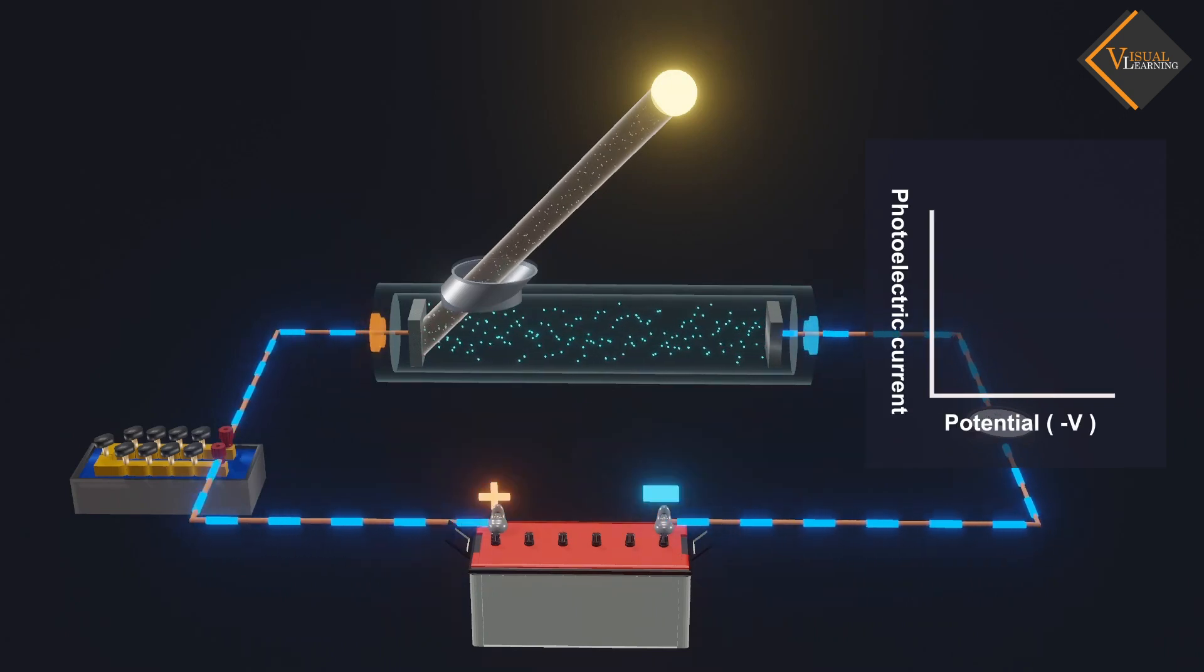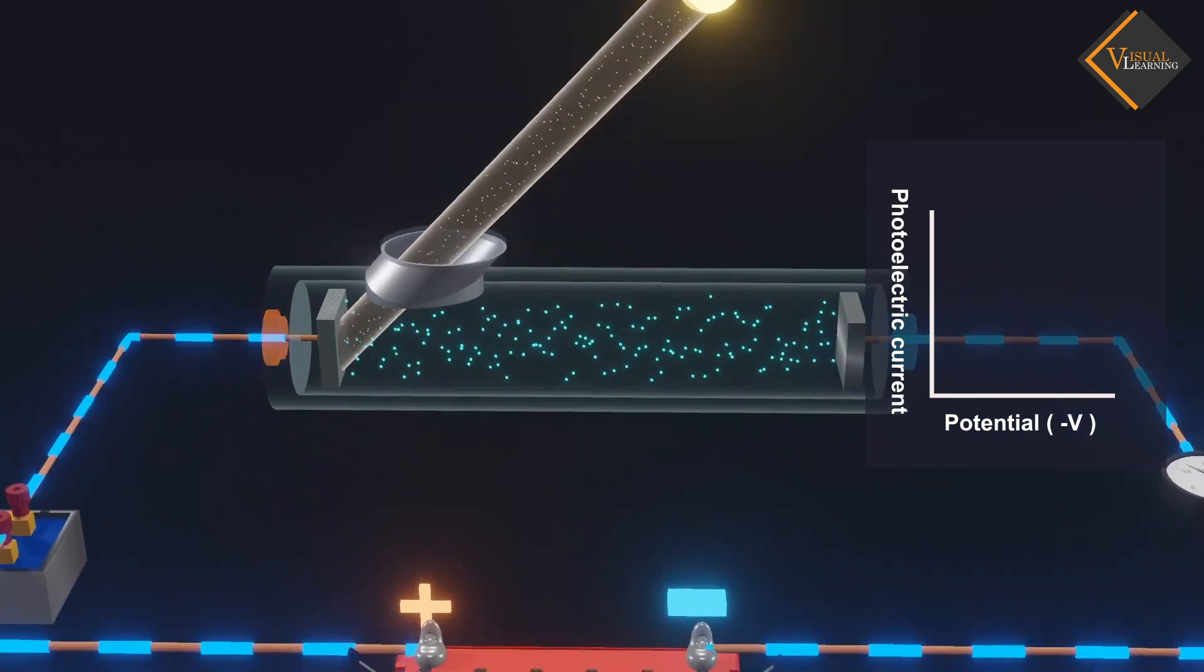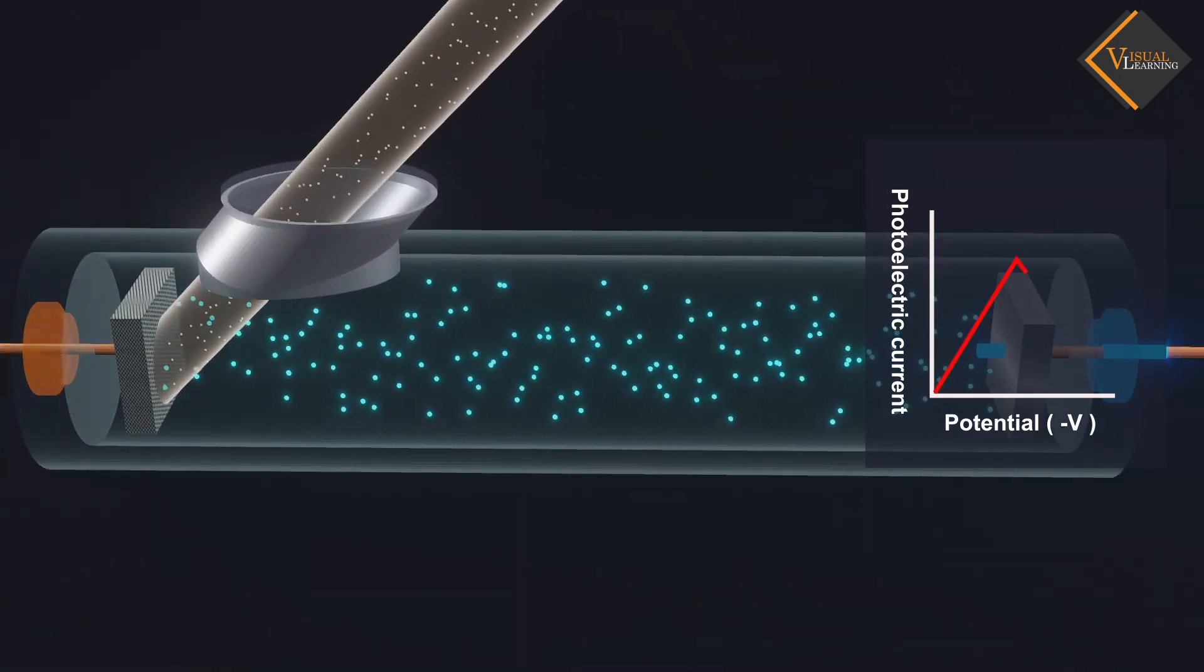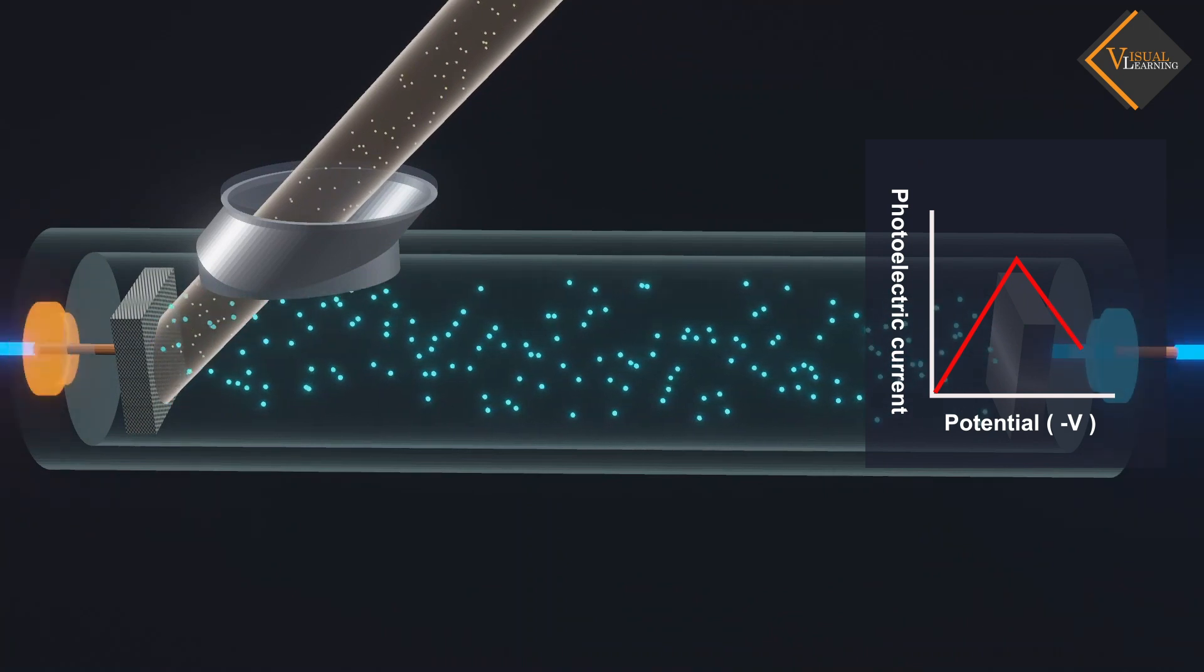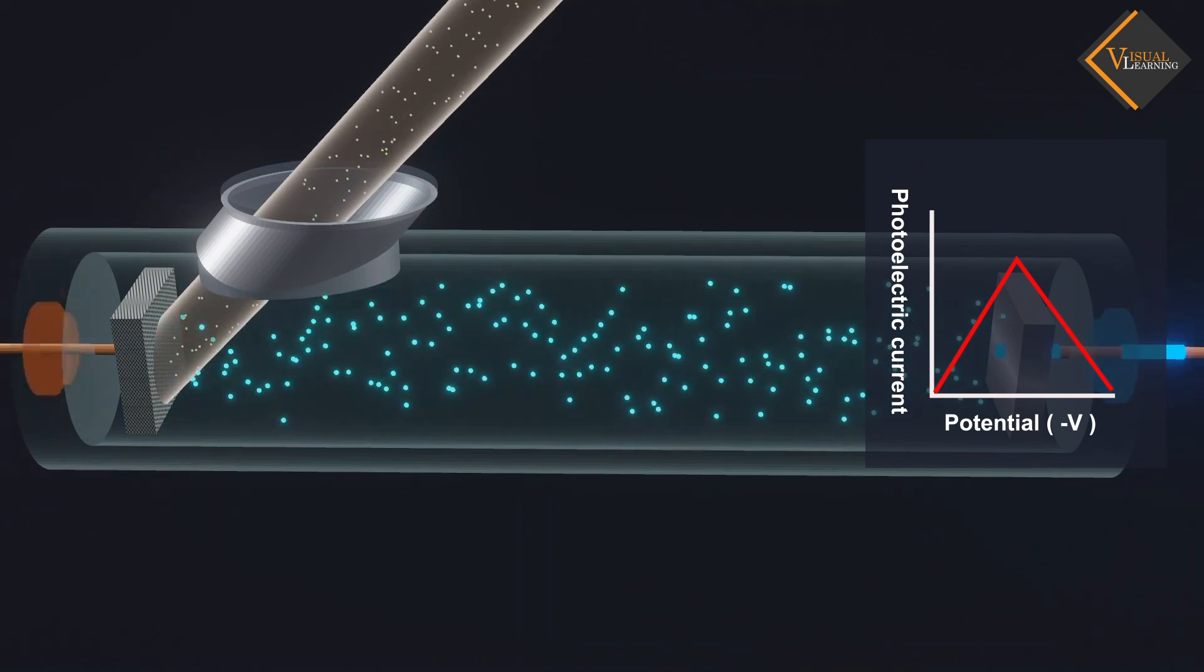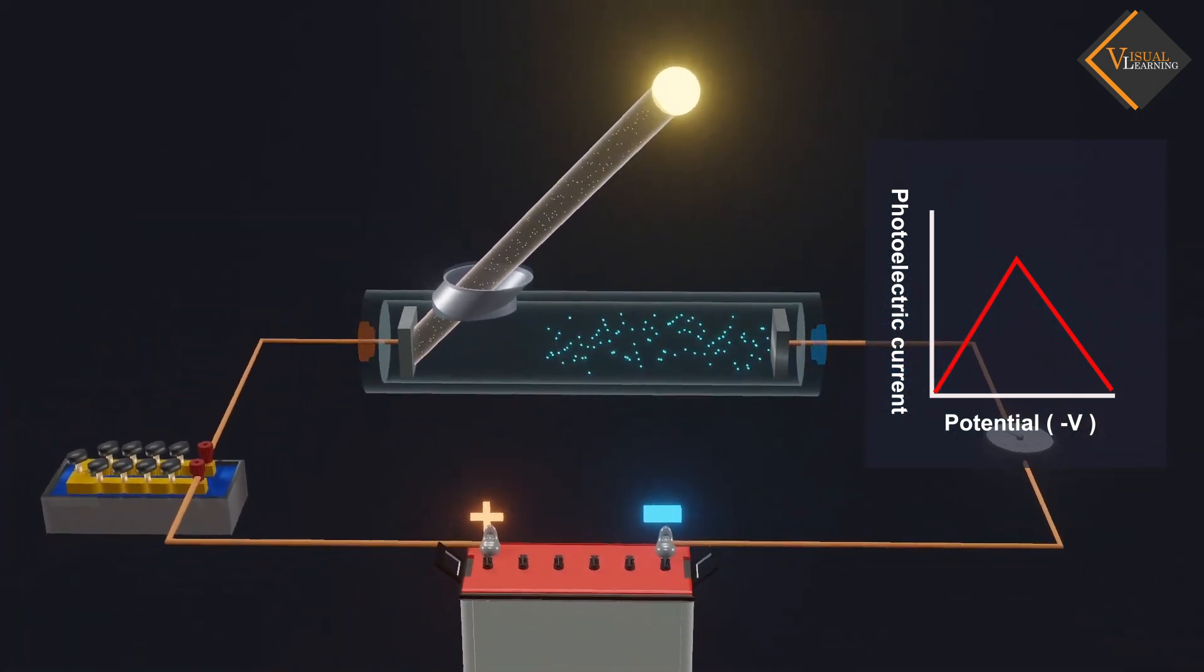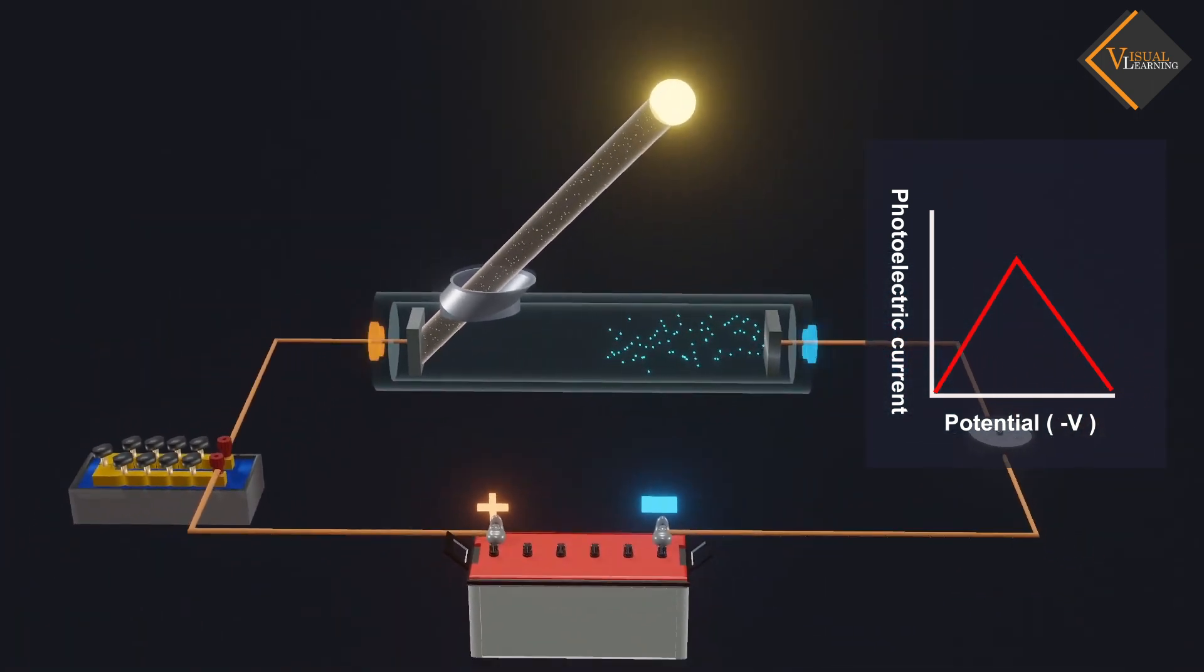If we reverse the voltage direction, we observe that the photoelectric current starts to decrease. Moreover, if we keep increasing the reverse voltage continuously, the photoelectric current reaches a point where it becomes zero. This negative voltage is known as the stopping potential.